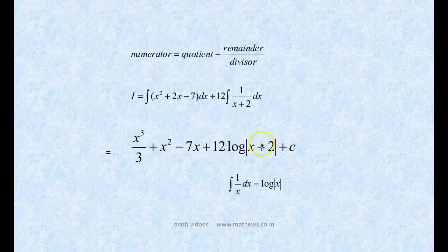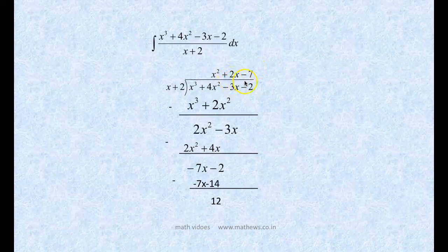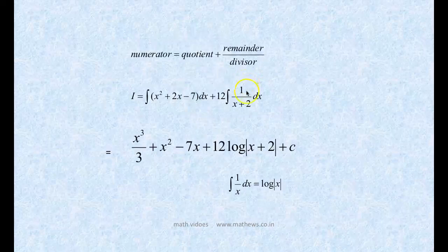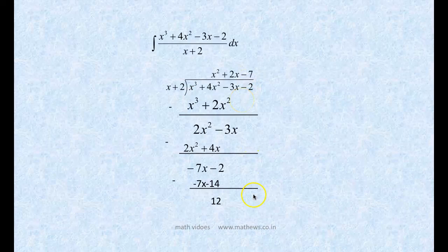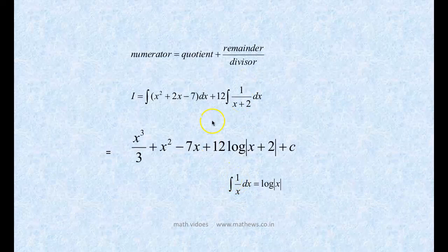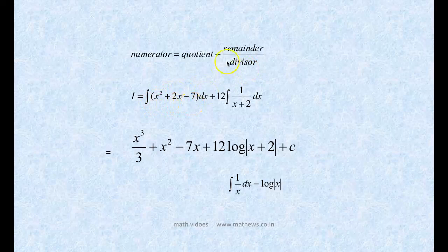The result is expressed as quotient plus remainder over divisor. The quotient is x² + 2x - 7 and the remainder is 12, so we write it as x² + 2x - 7 + 12/(x + 2). Now integrate each term.